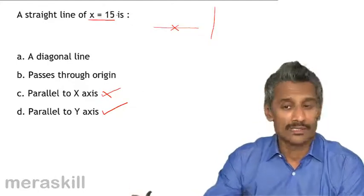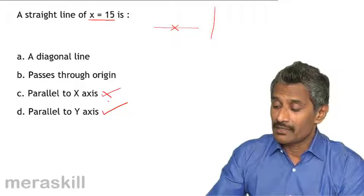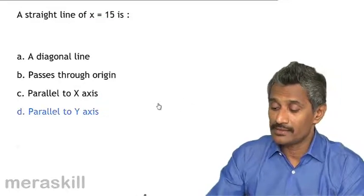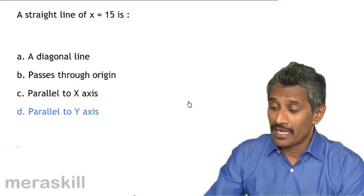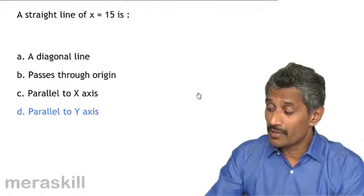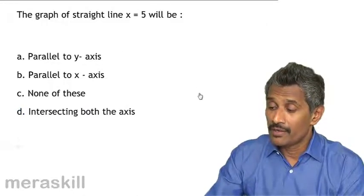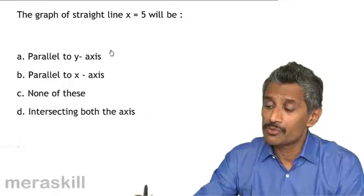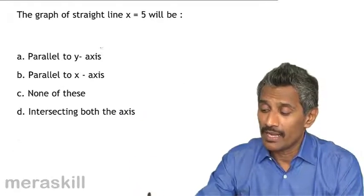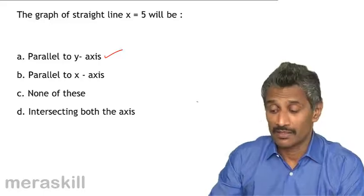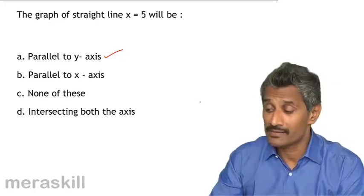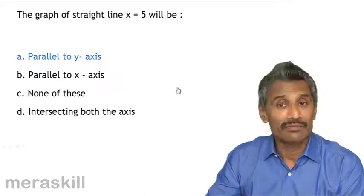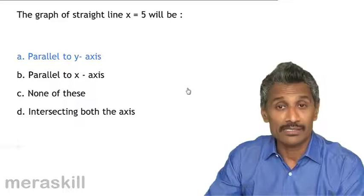Since x is a constant, hence it's a line parallel to the y-axis, then yes, we do have that. And next question goes this way. We have the graph of straight line x is equal to 5. At the same time, it's going to be parallel to the y-axis. Yes, it's a line parallel to the y-axis. And yes, we do have a line parallel to the y-axis, x is equal to 5.